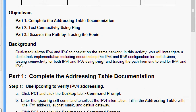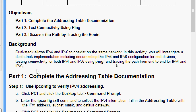Now we will see the background. Dual stack allows IPv4 and IPv6 to coexist on the same network. In this activity we will investigate a dual stack implementation, including documenting the IPv4 and IPv6 configuration for end devices, testing connectivity for both IPv4 and IPv6 using ping, and tracing the path end-to-end for both IPv4 and IPv6.